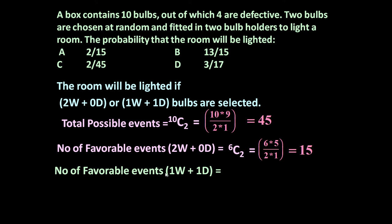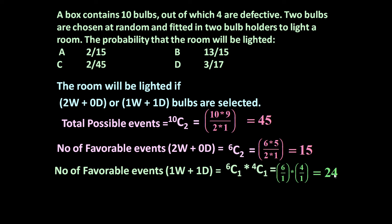Now number of favorable events if we select 1 working and 1 defective bulb: 1 working bulb from 6 working bulbs is 6C1, and 1 defective out of 4 defective bulbs is 4C1. So 6C1 × 4C1 equals 6 × 4, which is equal to 24. So in 24 different ways we can select 1 working and 1 defective bulb.